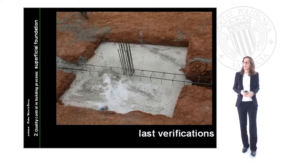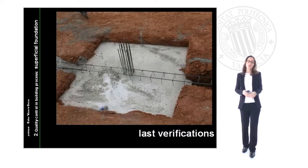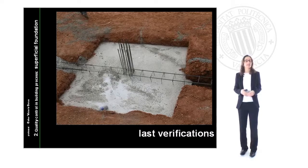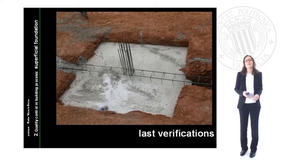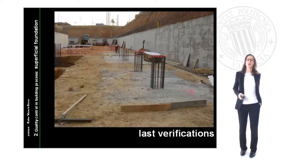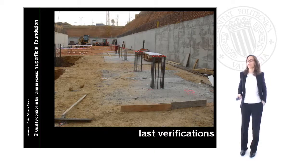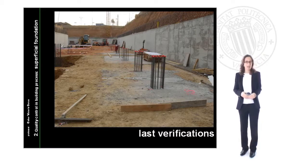Last verifications are a useful activity in a quality control building process. Last verifications confirm to the work director that the unit is completely well done and is ready to continue with the next one. Here we can see how the last verification gives the okay to the next activity, while still waiting for the next controlling structure for the pillars unit. Thank you very much.